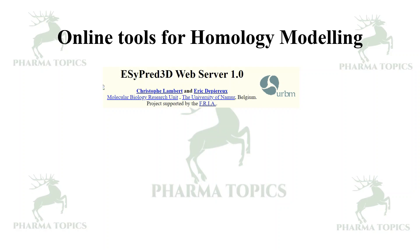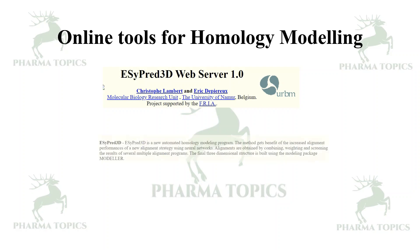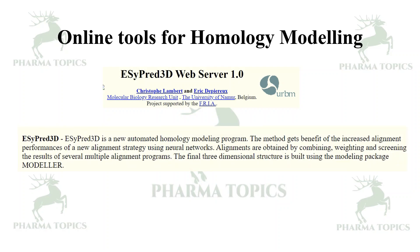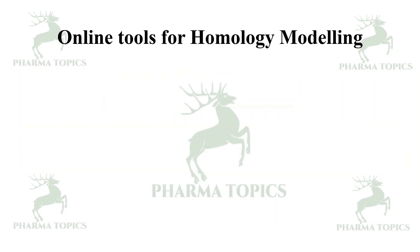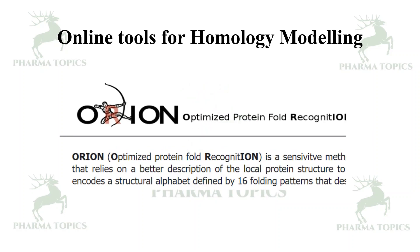EasyPred3D is a web server that is a new automated homology modeling program; the three-dimensional structures are built using the modeling package MODELLER, so it has an interface with MODELLER. ORION (Optimized Protein Fold Recognition) is a sensitive method that relies on better description — it also gives fold fragments and is a widely used program for homology modeling.